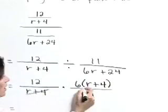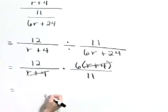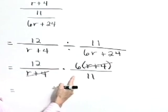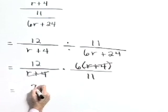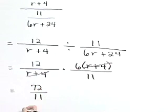Now cancel your common factors, the r plus 4s, nothing else to cancel. Now let's multiply, 12 times that 6 is 72 in the denominator, we have an 11.